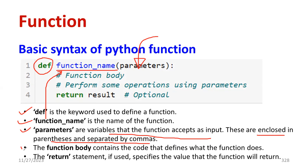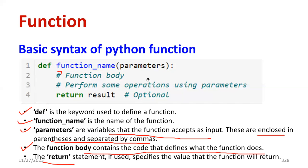The function body consists of code that defines what the function does — you can perform operations inside it. The return statement gives the output or exits the program. This is the basic idea of a user-defined function.